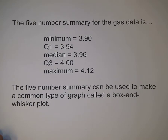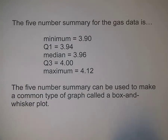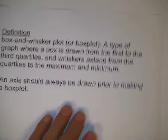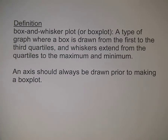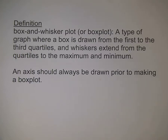The five-number summary can be used to make a common type of graph called the box and whisker plot. Before you make a box and whisker plot, you always need to find the five-number summary. The box and whisker plot — or just box plot — is a type of graph where a box is drawn from the first to the third quartile, and whiskers extend from the quartiles to the maximum and the minimum.